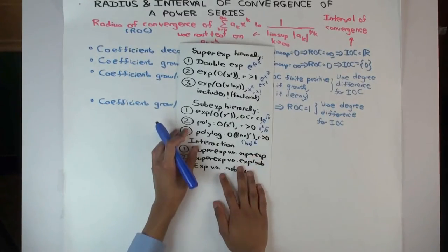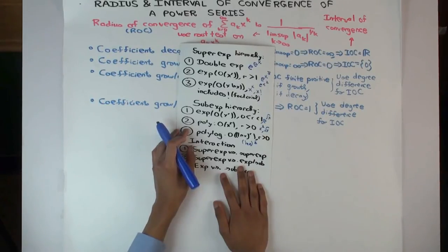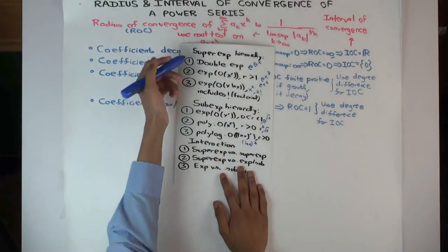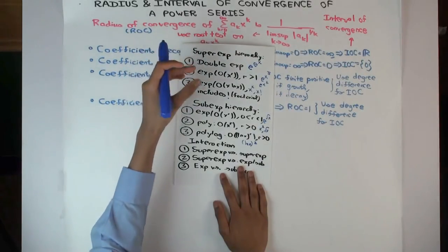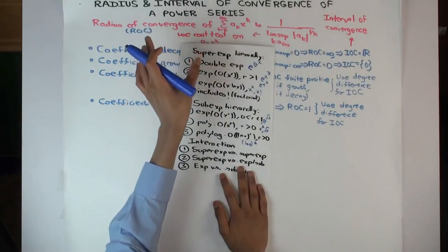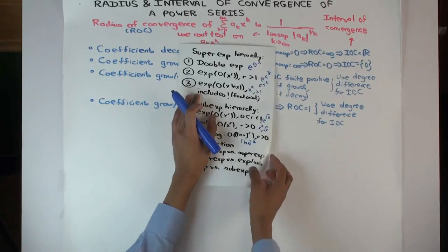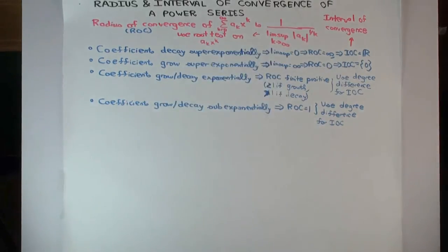How do two superexponential things interact? Multiplying two superexponential things gives something still superexponential. When dividing, if they're exactly matched they cancel, but if one is higher in the hierarchy it determines the outcome. If the numerator is higher in the hierarchy the overall behavior is superexponential growth; if the denominator is higher it's superexponential decay. With these things in mind, let's look at a bunch of examples.